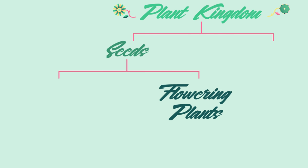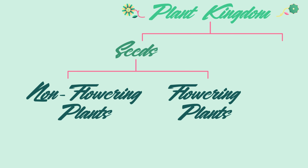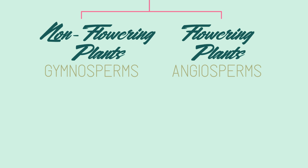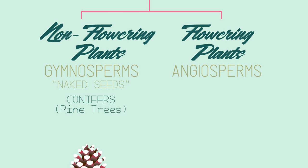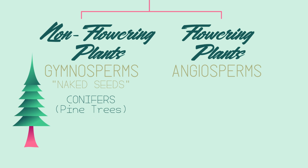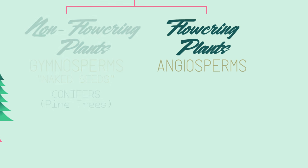Seed plants can be split into flowering plants and non-flowering plants. These have scientific names of gymnosperms and angiosperms. Non-flowering plants do not produce flowers and are reproduced by means of exposed seed or ovule. Gymnosperm means naked seed. Like with conifers, the cone on a pine tree is a naked seed and they do not produce flowers. Gymnosperms are usually tall, evergreen trees, often with needle-shaped leaves, and are usually found in dry places.